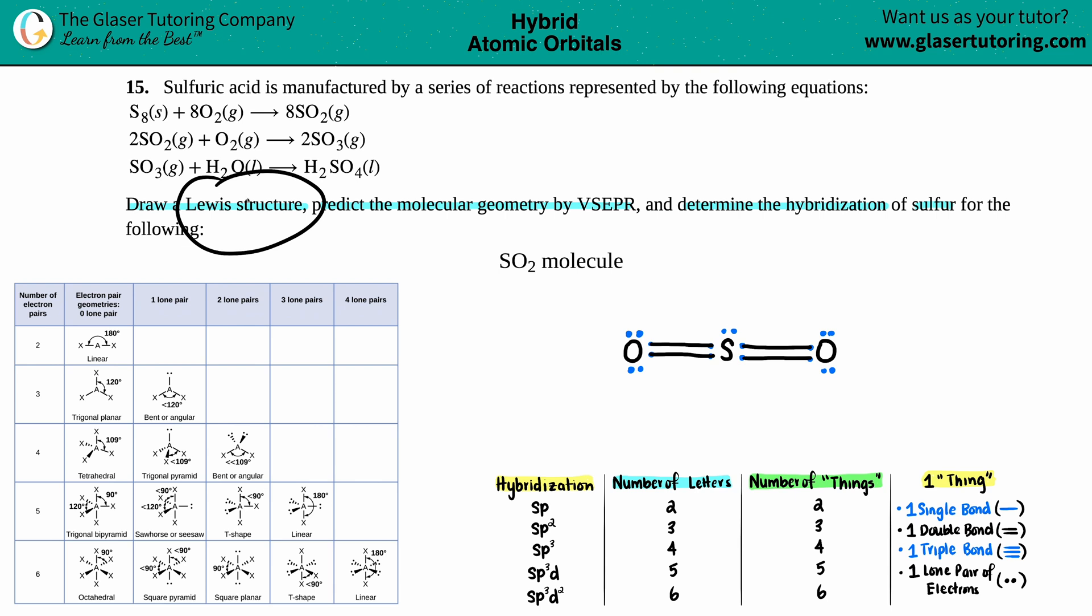So Lewis structure done. Now we're moving on to geometry. So in this case, we're looking at the sulfur. They wanted the geometry and the geometry always comes from the central atom, which is the sulfur. Now in this case, it looks like the sulfur is bound to two oxygens and it's got one lone pair. So when I'm looking at my geometries, I say, what is the geometry in which I'm bound to one oxygen, I'm bound to another oxygen and a lone pair. So I got two bonds and one lone pair.